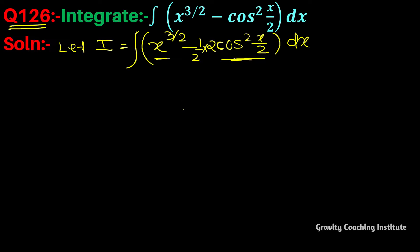So this is 2 cos square x by 2. We can use the formula for trigonometric identity, so this is 1 plus cos x.